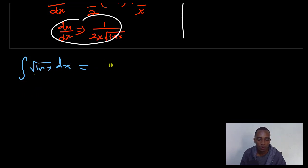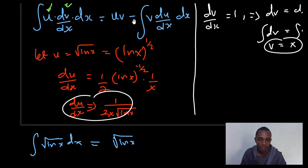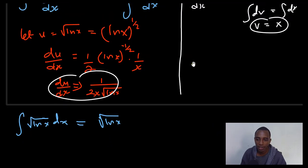So u is square root of ln x. Then v, we're just substituting in this formula here. v is x, just evaluated that up here. So this is x.